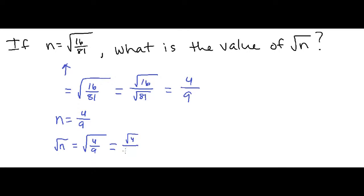So again, doing what we did before, this is equal to the square root of 4 over the square root of 9, and that's going to be equal to 2 over 3. And that is your final answer.